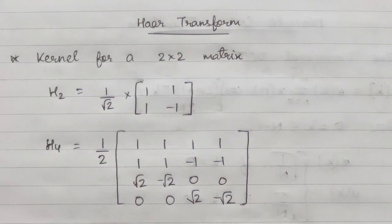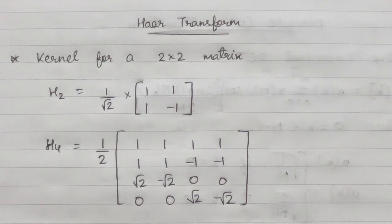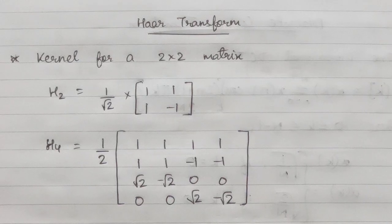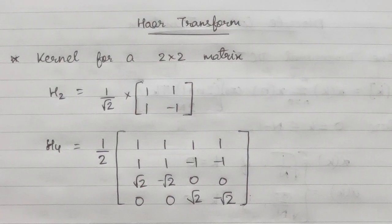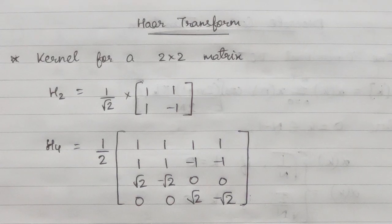Now both DCT and Haar Transform are image compression techniques. DCT works by separating images into parts of differing frequencies, whereas Haar Transform is an efficient way to perform both lossless and lossy image compression.